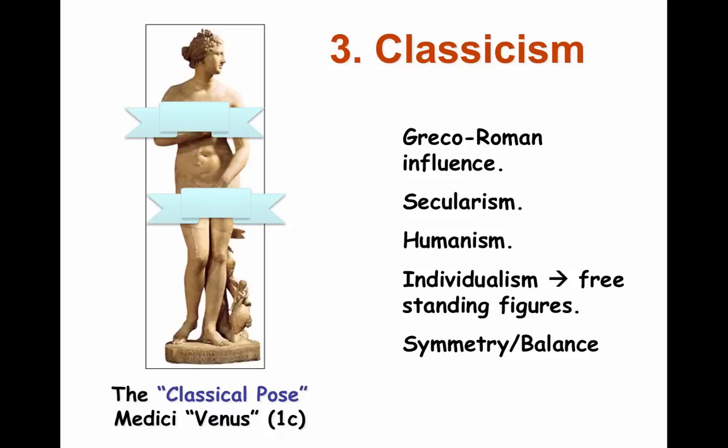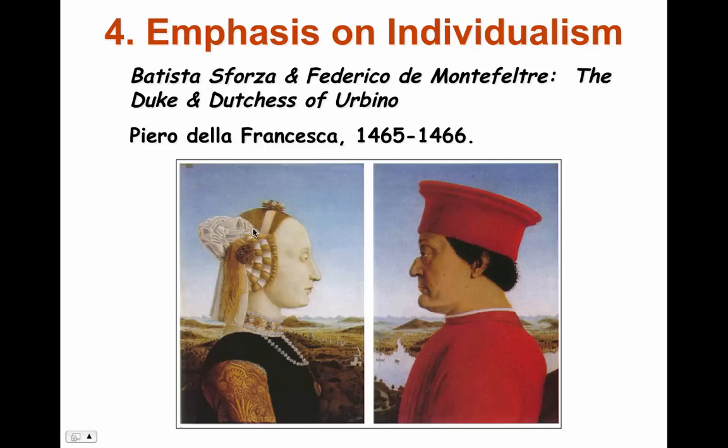There's symmetry and balance to the paintings and sculptures of the time. Number four: emphasis on individuals. Here you see a Duke and Duchess painting. Notice the people are in the forefront and everything else is in the background.